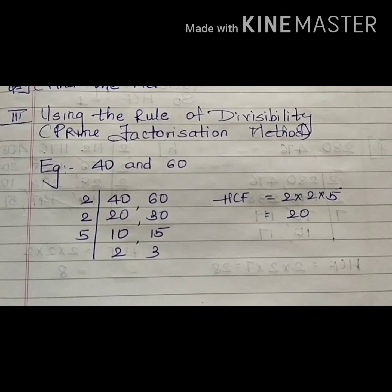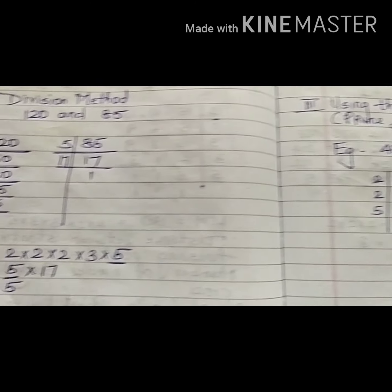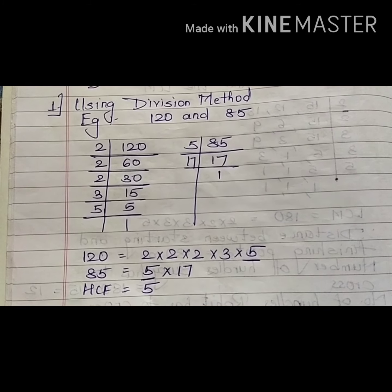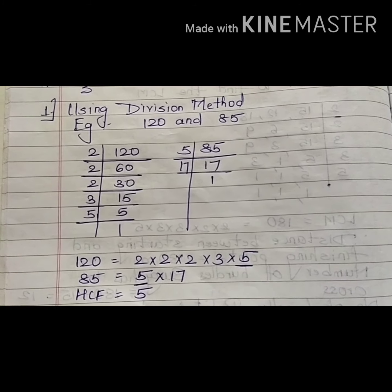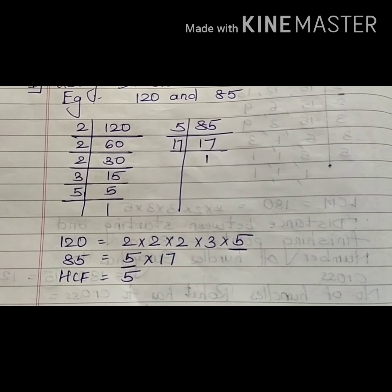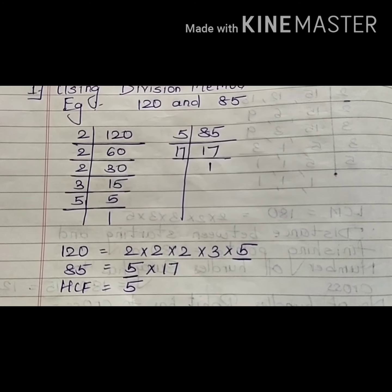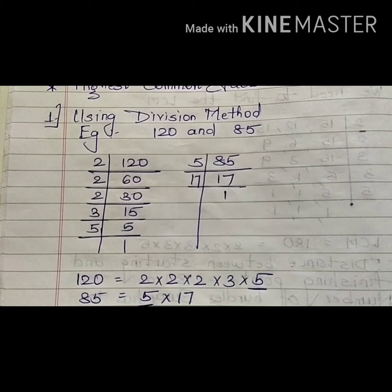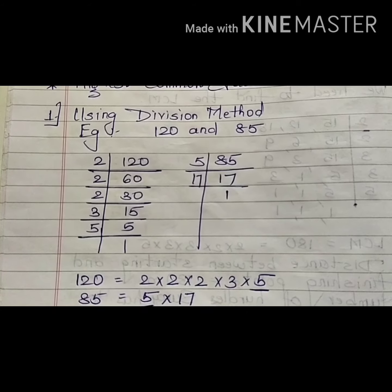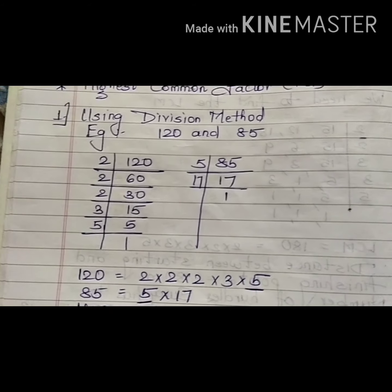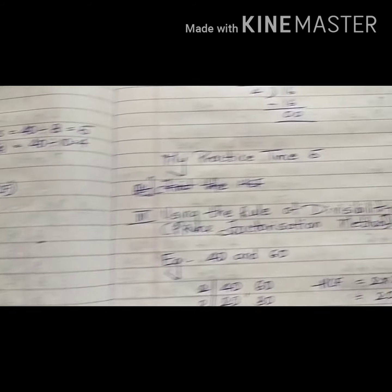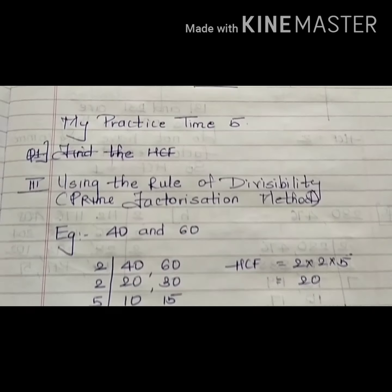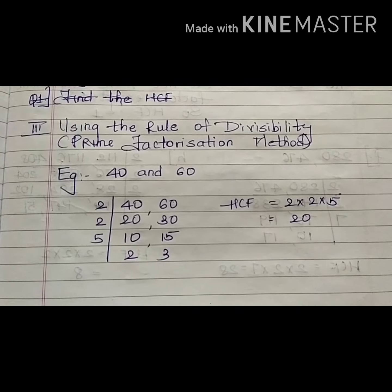Earlier, the method we did as prime factorization was where we factorized both numbers differently, took out the common pair of factors, and multiplied them. This year we will be calling that method the division method. So we are going to do two methods: the long division method and the prime factorization method.